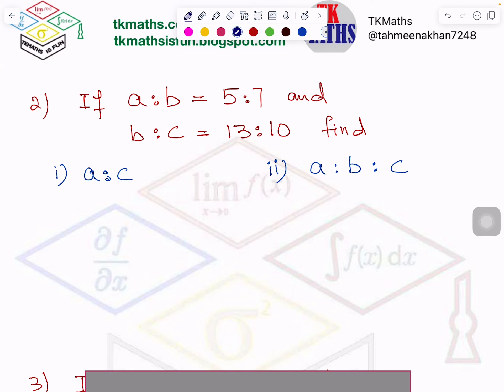So now if I look at the question, again a is to b is given and b is to c. So b is a common letter. So again I will write the way I wrote earlier. Here, a is to b is to c.